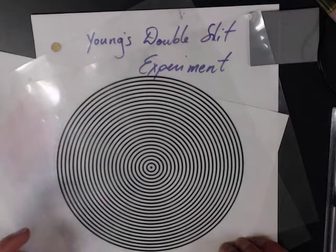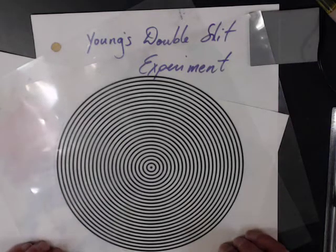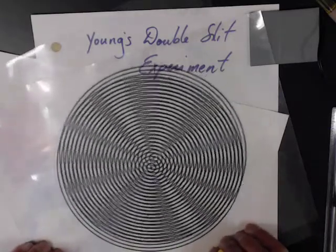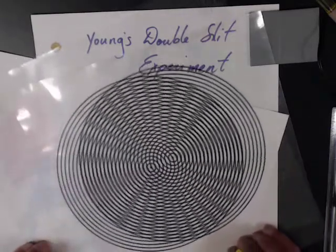Thomas Young thought light was a wave, but in order to prove it, he had to show that it exhibited wave-like properties, like diffraction patterns and the whole thing, so you get something funky like this.